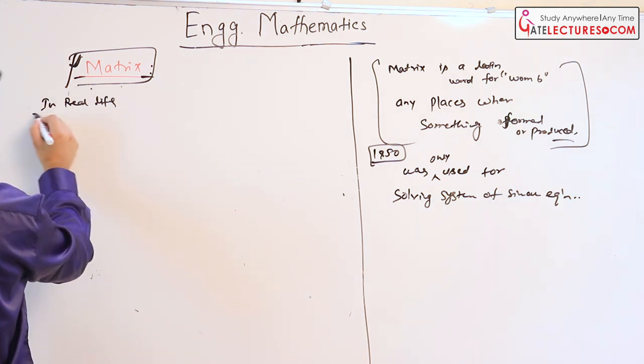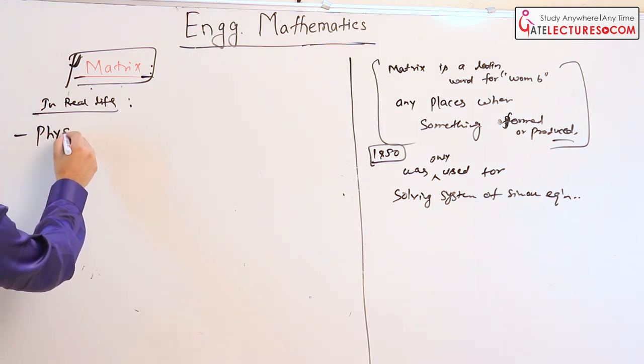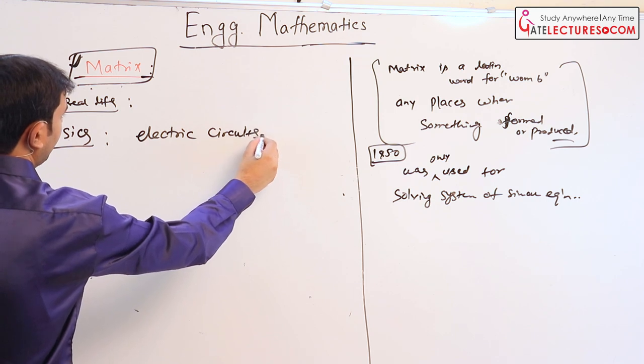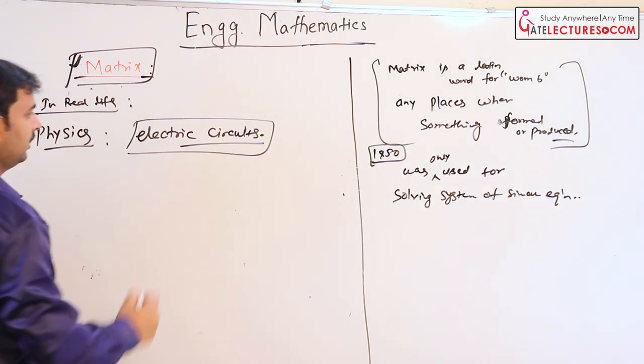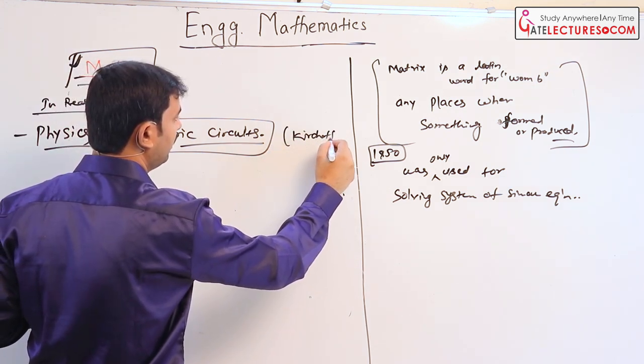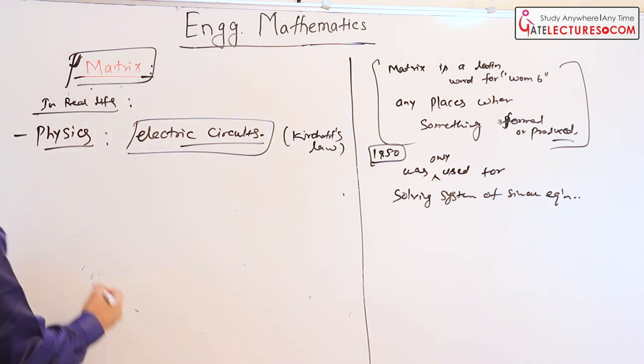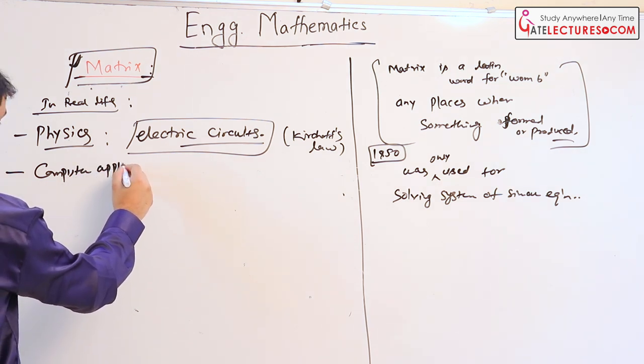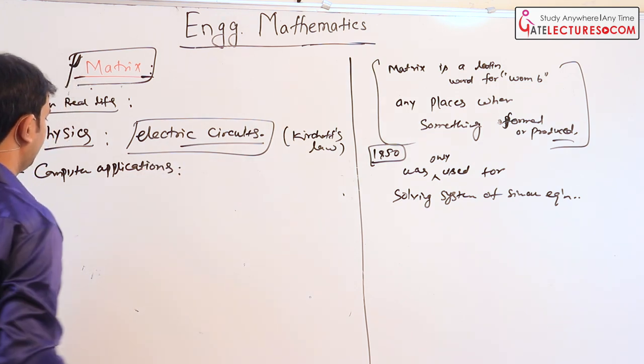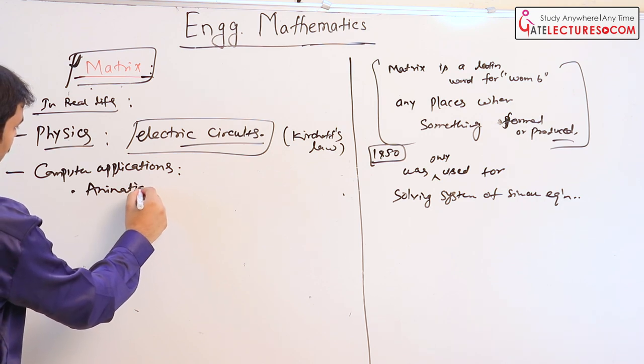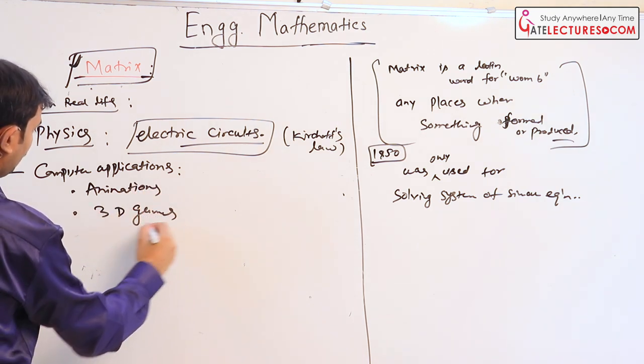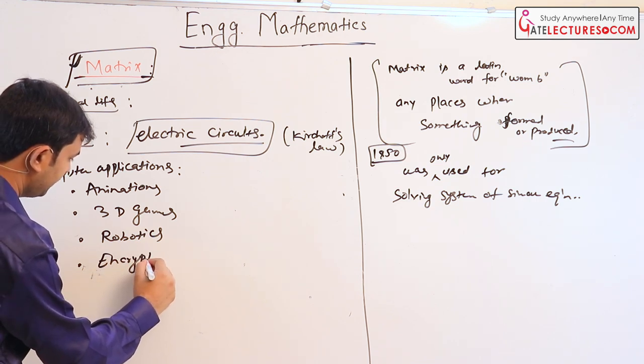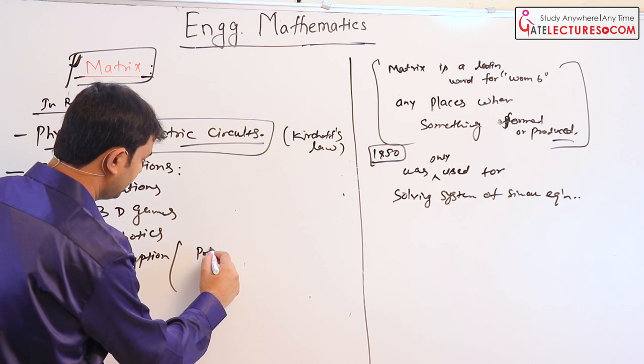In real life, the matrices are used in physics problems. Physicists use them to solve electric circuits. And matrices are used in physics, also in computer science, computer applications. Matrices are widely used nowadays, such as in animation, in 3D games, also in robotics.